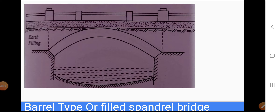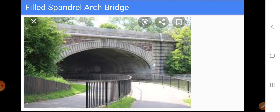This is a filled spandril arch bridge, with earth filling shown here. The deck is generally supported on earth filling placed on the arch slab and retained by the spandril walls. The spandril wall and the filling are shown here.